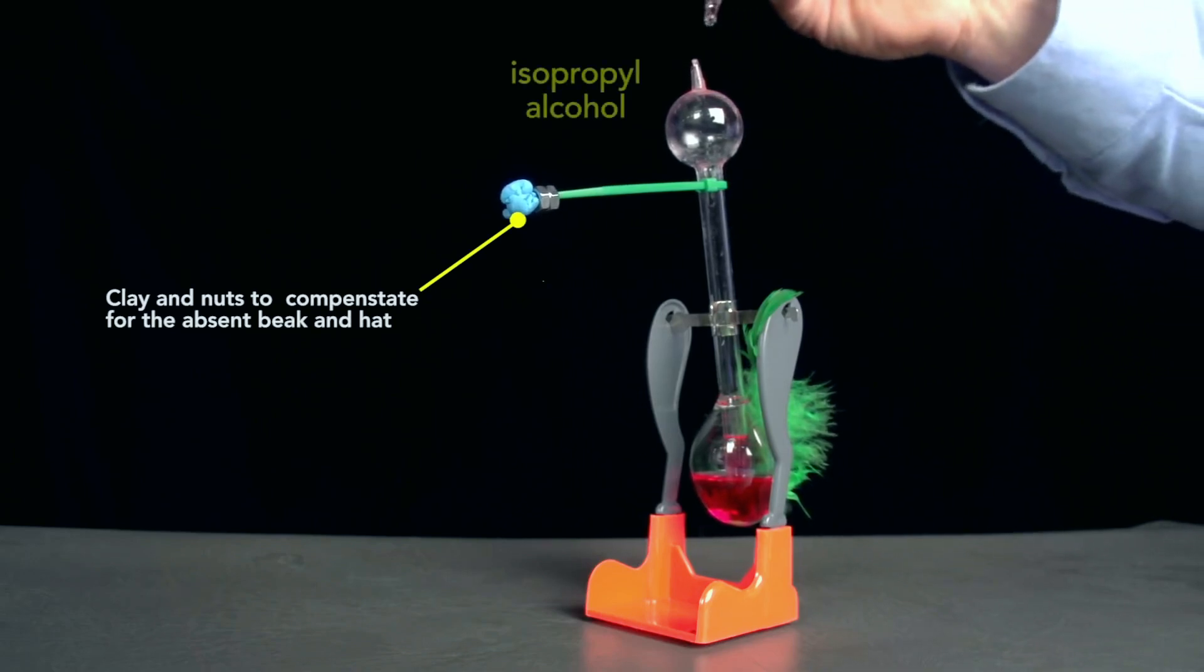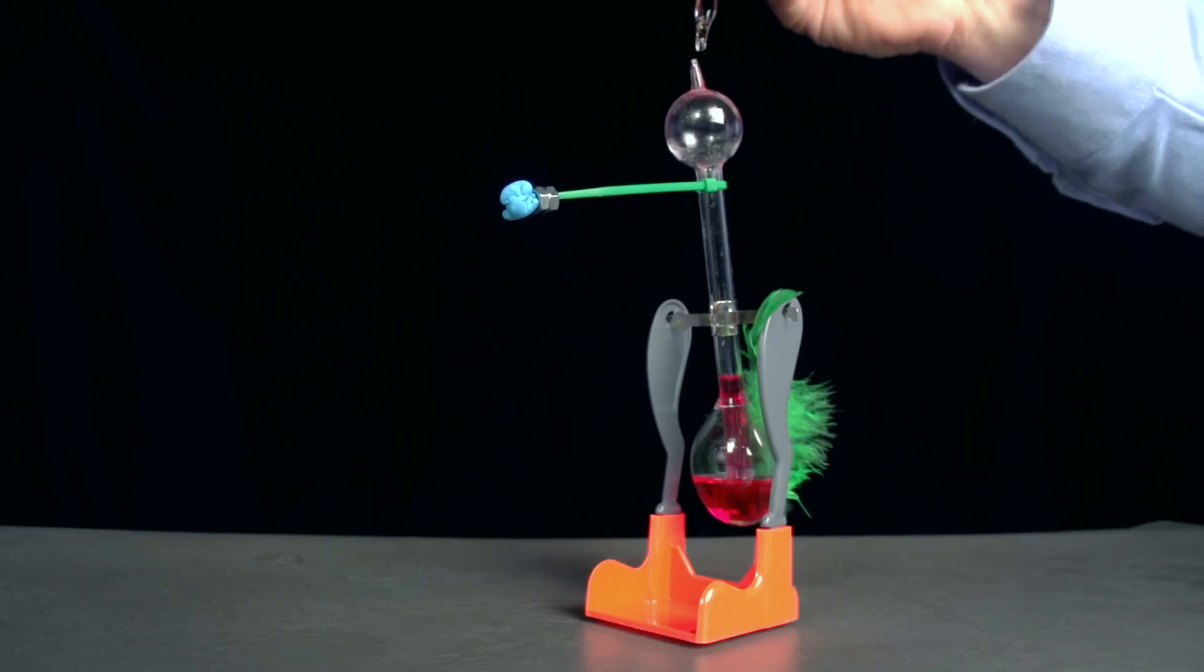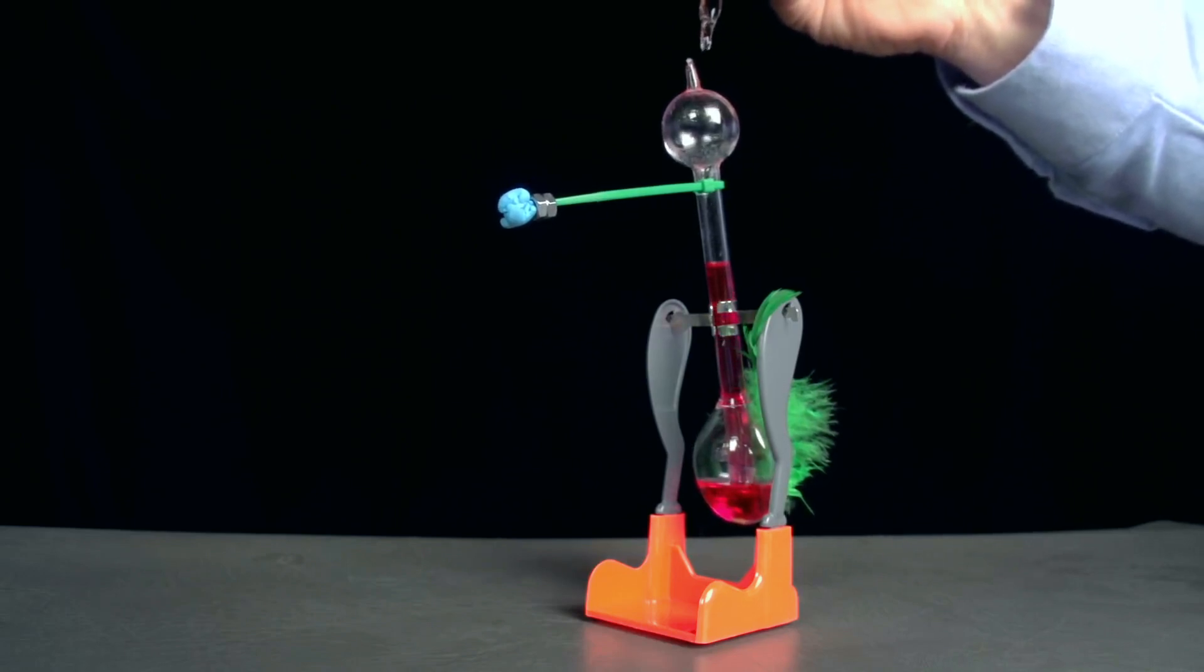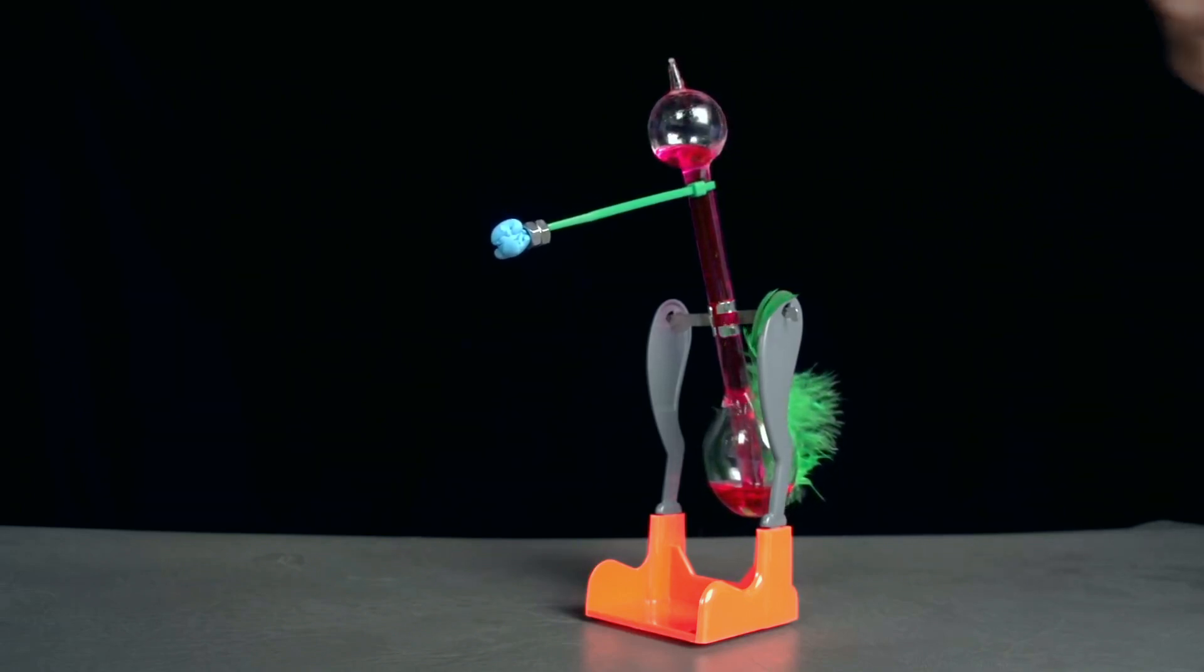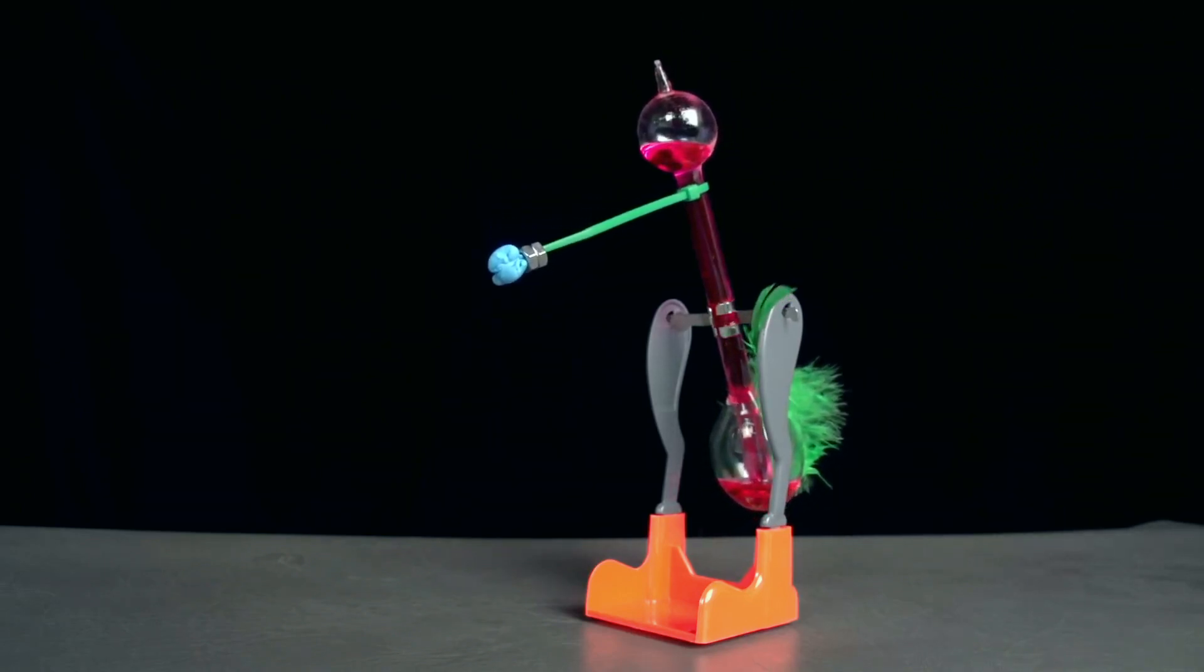Now watch as I put a few drops of isopropyl alcohol on the top bulb to cool it. The liquid rapidly rises to the head. This changes the bird's center of gravity so that it will tilt forward. The head now fills with liquid, and then... There.